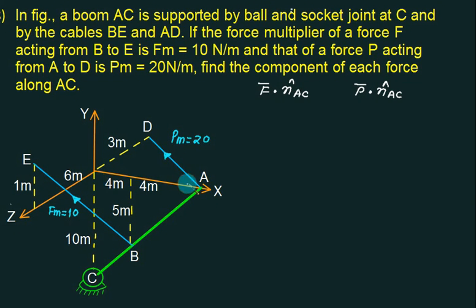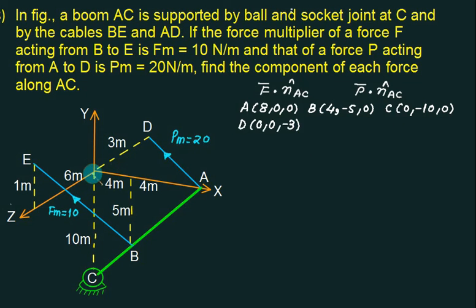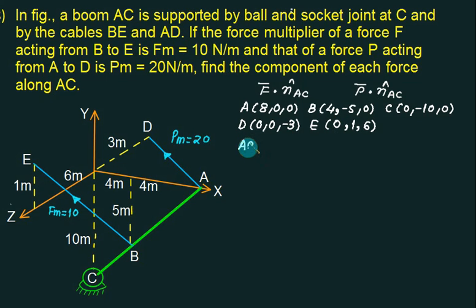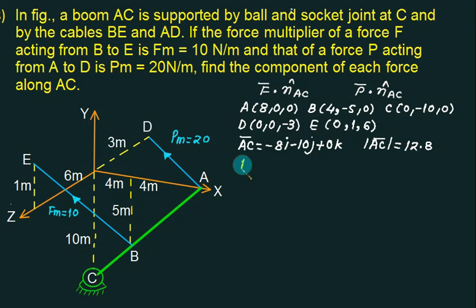The coordinate of point A: 4 + 4 = 8, so A is at (8, 0, 0). Point B: 4 along x-axis and 5 along y-axis, so B = (4, 5, 0). Point C is on the negative y-axis. Point D is on the negative z-axis. Point E: move along positive z to 6, then upward positive y by 1 meter, and x = 0, so E = (0, 1, 6). Vector AC bar = C minus A.